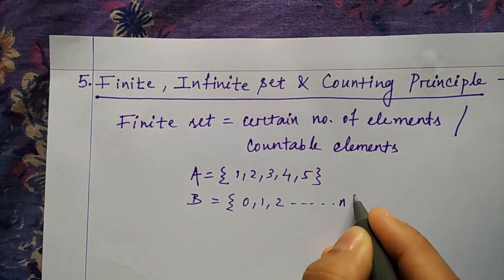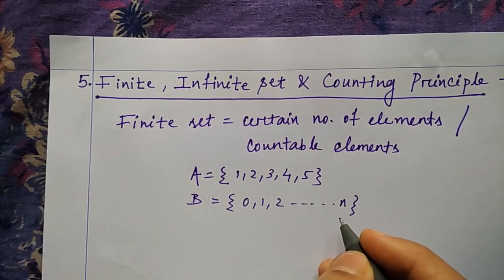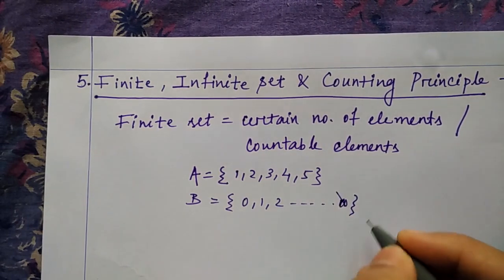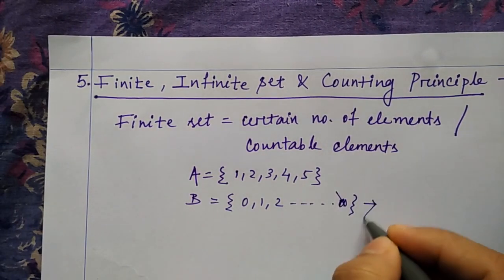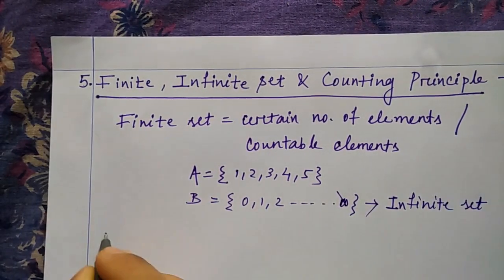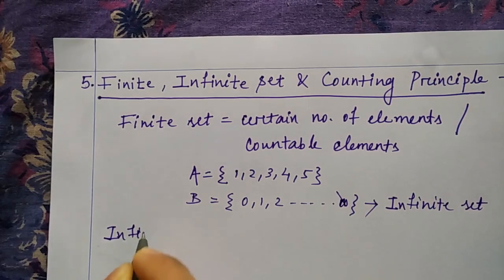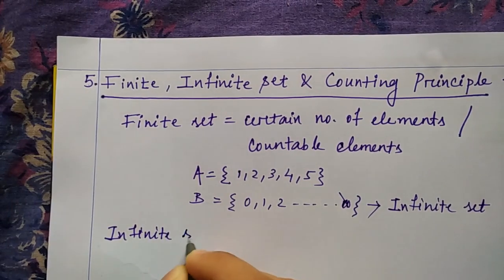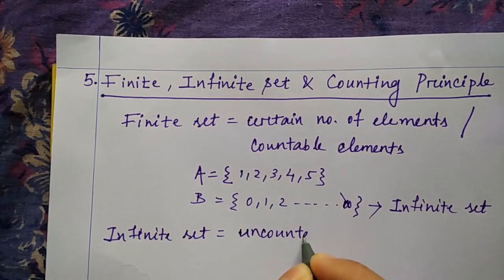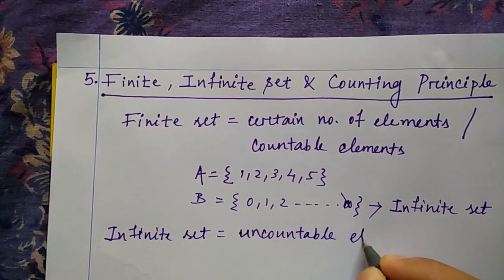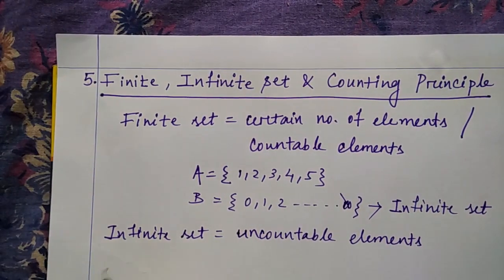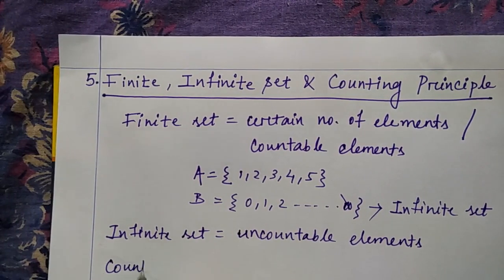Let me take another set B = {0, 1, 2, ..., n}. You don't know what the limit is — you don't know how many elements are there, or you can say it goes up to infinity. You can't count this, so this comes under an infinite set, which contains uncountable elements that can go up to infinity.